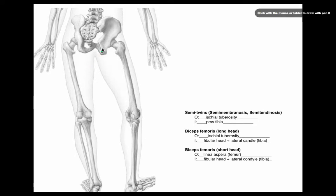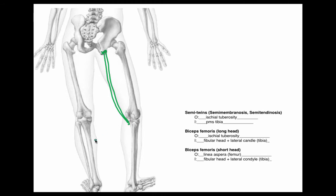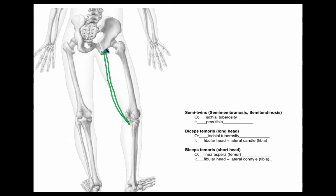Let's look at one more picture showing everything from the posterior side. The semi twins originate from the ischial tuberosity — this bump here on the backside — and wrap down to the proximal medial surface of the tibia. On the lateral side we have the biceps femoris long head going to the lateral condyle of the tibia and the fibular head, and the biceps femoris short head originating from the linea aspera on the posterior femur, inserting in the same two spots. That brings us to the end of this video.